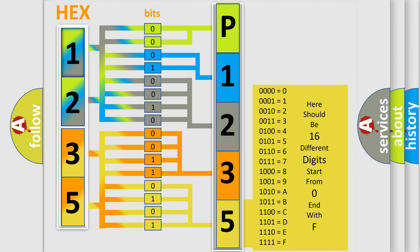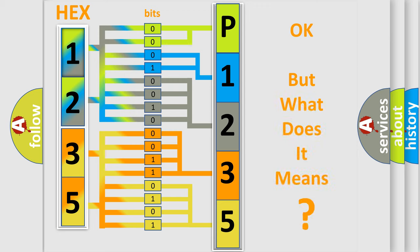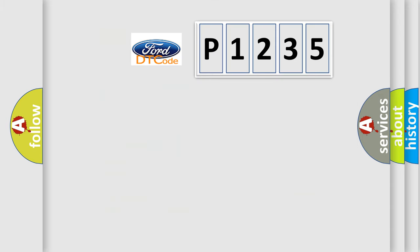We now know in what way the diagnostic tool translates the received information into a more comprehensible format. The number itself does not make sense to us if we cannot assign information about what it actually expresses. So, what does the diagnostic trouble code P1235 interpret specifically?